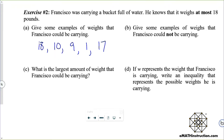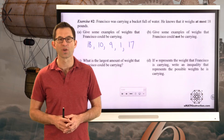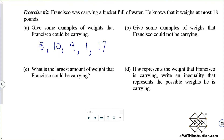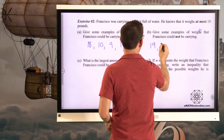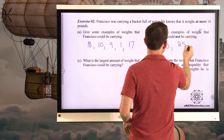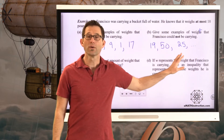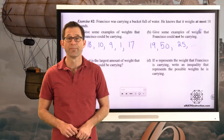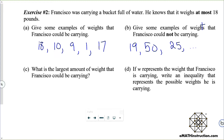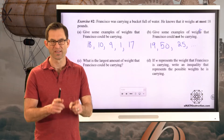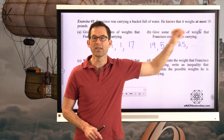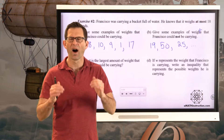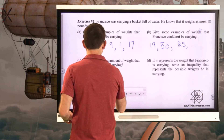Letter B gives some examples of weights that Francisco could not be carrying. He couldn't be carrying 19 pounds, couldn't be carrying 50 pounds, there's no way he's carrying 25 pounds — as long as you're writing down numbers more than 18, you're all set. Letter C: what is the largest amount of weight Francisco could be carrying? The whole point of 'at most 18' means 18 is the most we could have — the highest value — so 18 is the greatest amount he could be carrying.